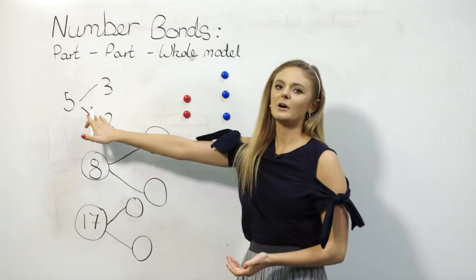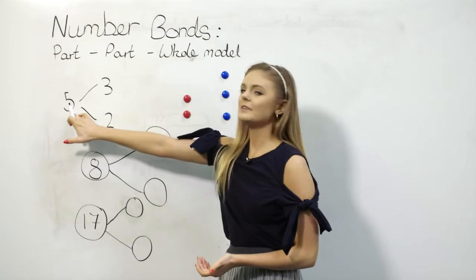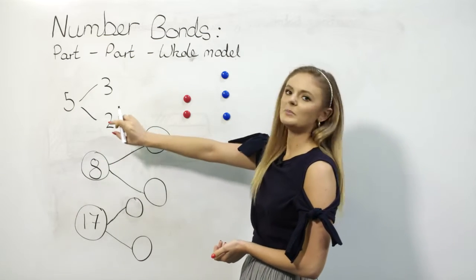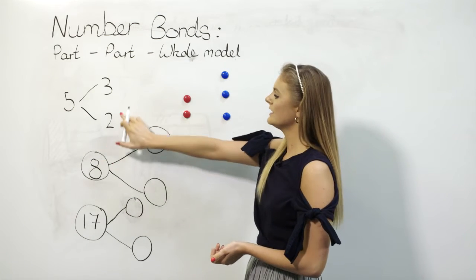Here is our part-part-whole model. We have 5, which is the whole, and it's been broken down into two parts: in this case, 3 and 2.